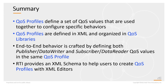In summary, QoS profiles define a set of QoS values designed to be used together to configure specific end-use behaviors. QoS profiles are defined in XML and organized in QoS libraries. End-to-end behavior is crafted by defining publisher data-writer QoS and subscriber data-reader QoS in the same QoS profile. RTI provides an XML schema file to help you create QoS profiles with XML editors.